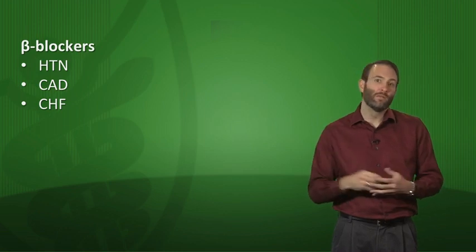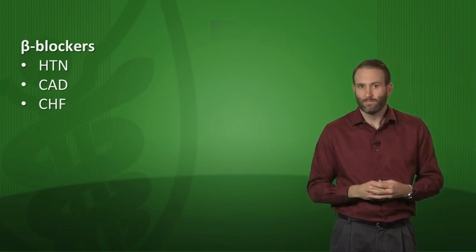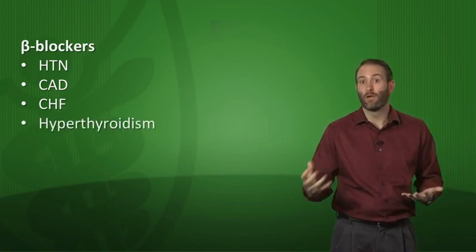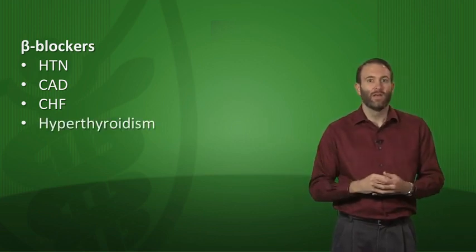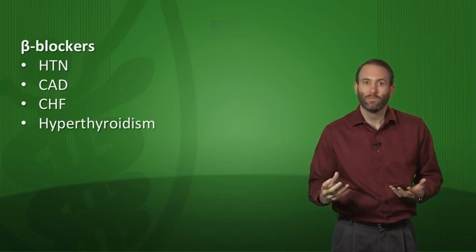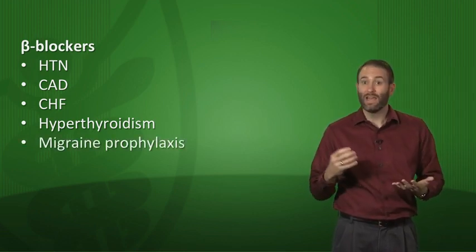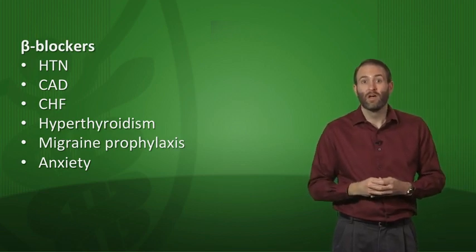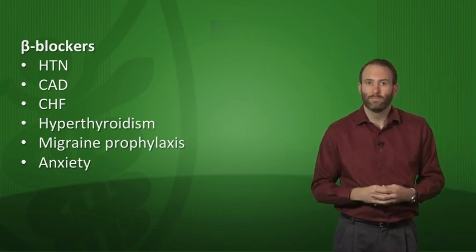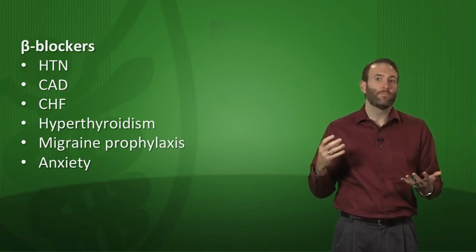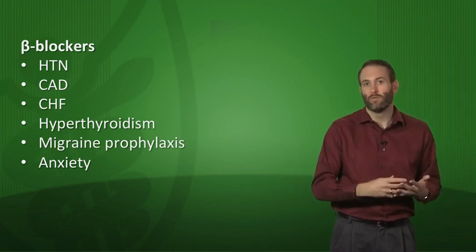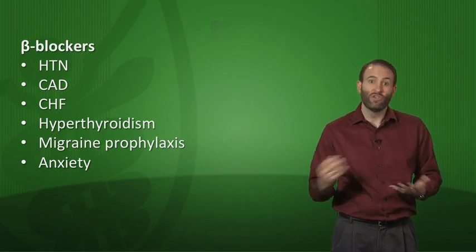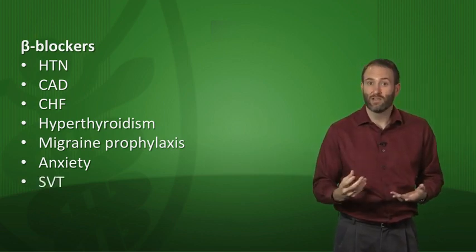Beta blockers can also slow the progression of congestive heart failure, but you have to be careful in patients with acute CHF exacerbation. Those patients aren't pumping well and may have pulmonary edema, so slowing the heart may make things worse — sometimes you have to take people off their beta blockers during exacerbation. Less commonly, beta blockers are used to treat symptomatic hyperthyroidism or, rarely, thyroid storm. Sometimes we use them for migraine prophylaxis or even anxiety. By blocking beta-1, you decrease heart rate by slowing the SA and AV nodes, so they can also be used in supraventricular tachycardia.